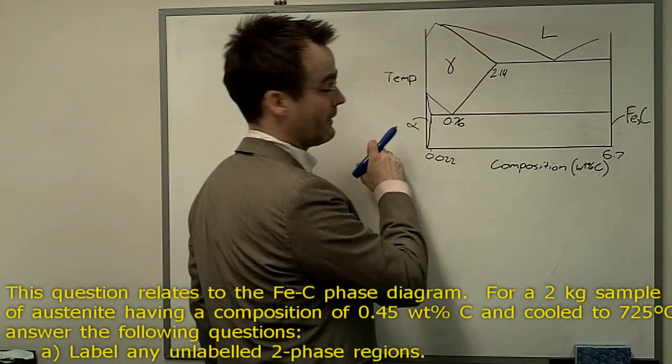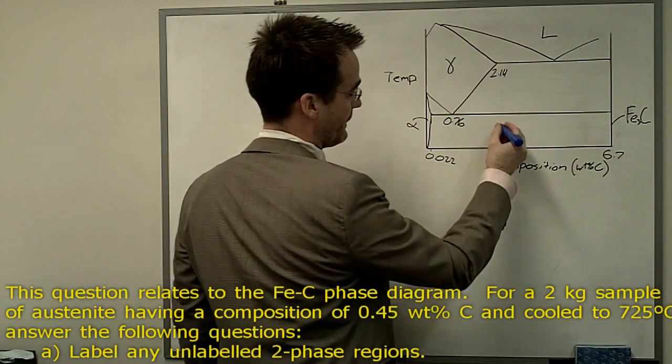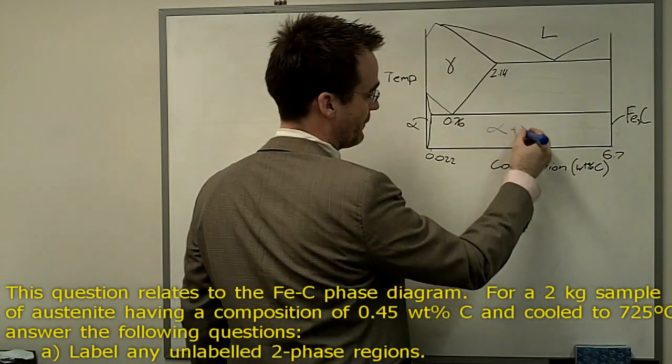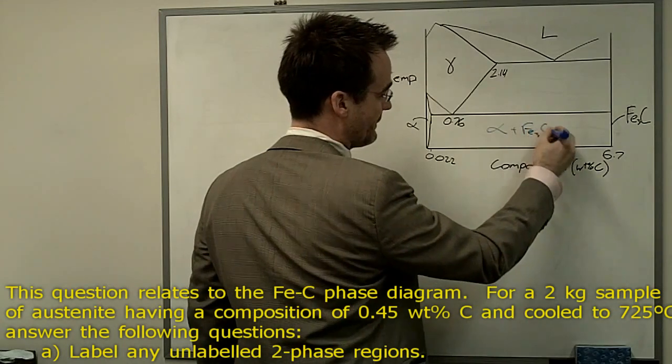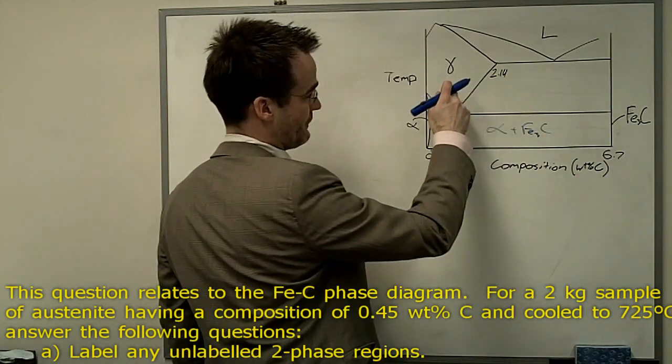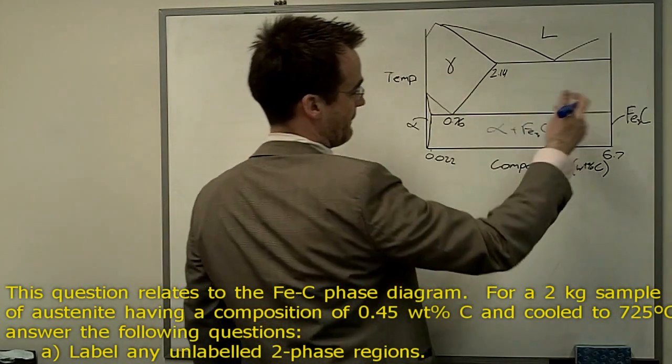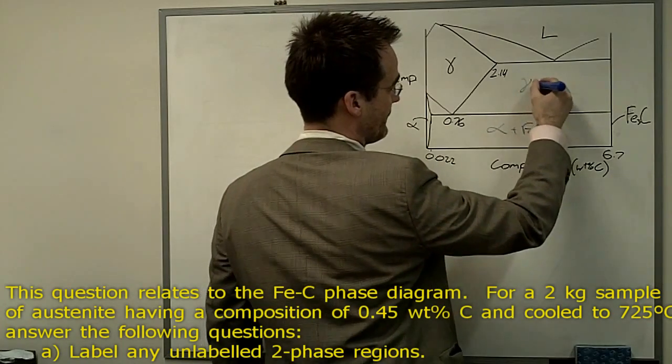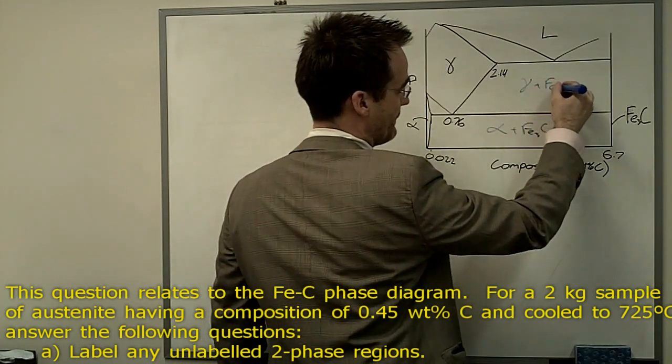We've got alpha on the left, ferrite, we've got cementite on the right. So this is the two-phase alpha plus Fe3C. We've got gamma on the left, Fe3C on the right. This is two-phase gamma plus Fe3C.